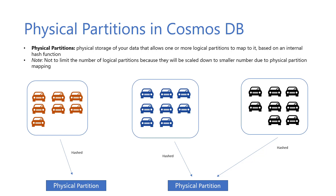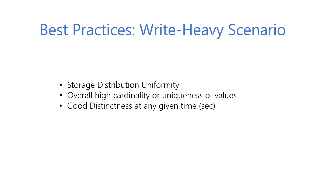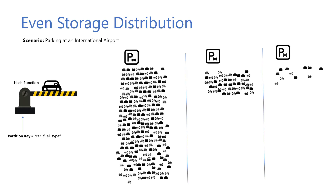Choosing the right partition key is not always easy. Let's go over some best practices on how to choose a partition key for a write-heavy use case. First thing to consider is having good storage distribution uniformity, overall high cardinality or uniqueness of values, and lastly good distinctness at any given time or second. Before your data is stored, Cosmos DB uses an internal hash function on the partition key to decide in what physical partition your data will be stored. All items that have the same partition key will be stored together in the same physical partition.